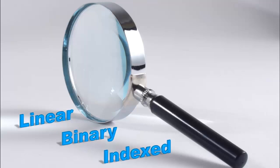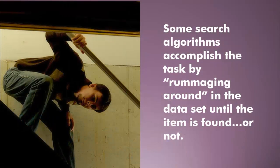Searching comes in three general flavors that we can implement a number of different ways. There's linear searching, binary searching, and finally index searching. Each has pros and cons, and each has a cost associated with it. When we know those pros and cons and we know the costs associated with it, we can make better choices as to what algorithm we want to choose.